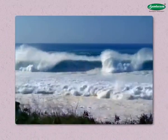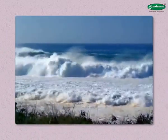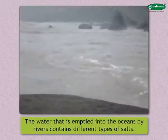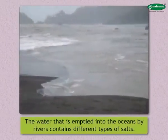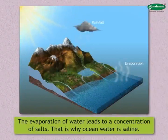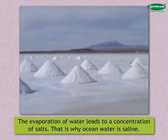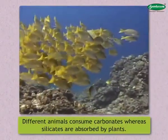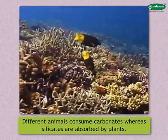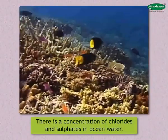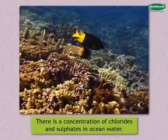Now let us move on to the second part of the chapter, which explains why ocean water is salty. The water emptied into the oceans by rivers contains different types of salts. The evaporation of water leads to a concentration of salts, which is why ocean water is saline. Different animals consume carbonates, whereas silicates are absorbed by plants. As a result, there is a concentration of chlorides and sulfates in ocean water.